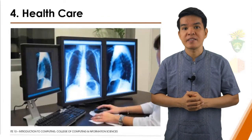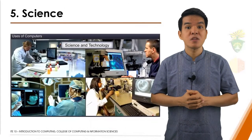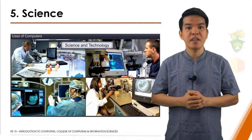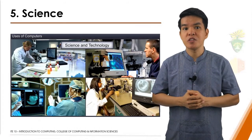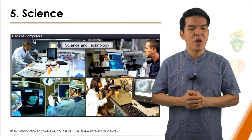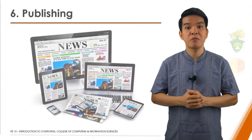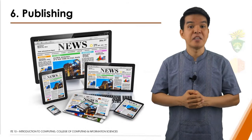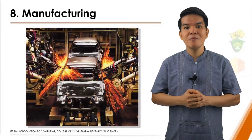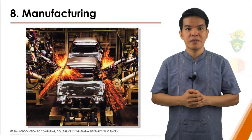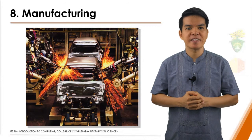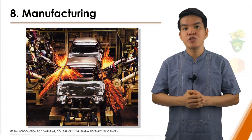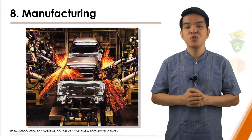All branches of science, from biology to astronomy to meteorology, use computers to assist them with collecting, analyzing, and modeling data. Scientists also use the internet to communicate with colleagues around the world. Even many magazines and newspaper publishers make the content of their publications available online. Many vehicles manufactured today include onboard navigation systems. Some mobile users prefer to carry specialized handheld navigation devices. This handheld navigation device gives users turn-by-turn, voice-prompted directions to their destination.